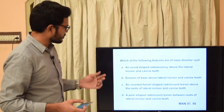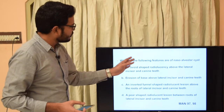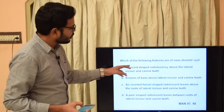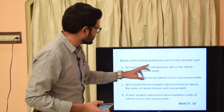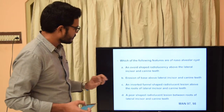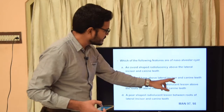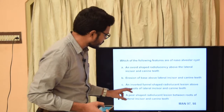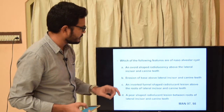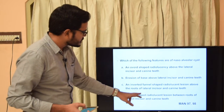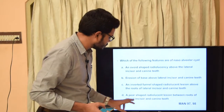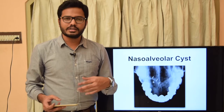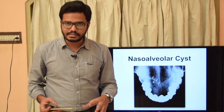Now let's move on to the next question: which of the following features are characteristic of nasoalveolar cyst? Option A - an ovoid-shaped radiolucency above the lateral incisor and canine teeth; option B - erosion of the base of maxilla above lateral incisor and canine teeth; option C - an inverted funnel-shaped radiolucent lesion above the roots of lateral incisor and canine teeth; option D - a pear-shaped radiolucent lesion between roots of lateral incisor and canine teeth.